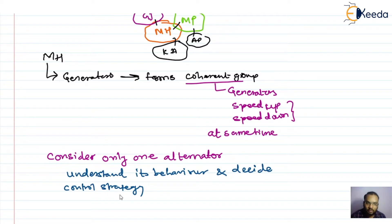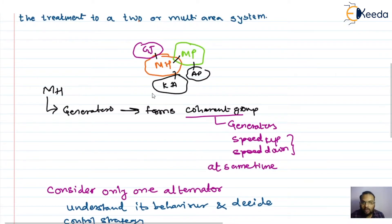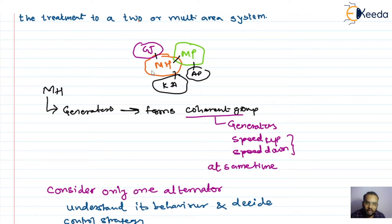Once we understand how to control the load frequency for one particular area, we can extend that same understanding to all other areas. For example, if initially we were concerned with controlling the load frequency of Maharashtra, we can then extend that control strategy to another area for two-area or multi-area control. In the multi-area case, we also need to monitor the behavior of the tie line — how power is flowing on that tie line.